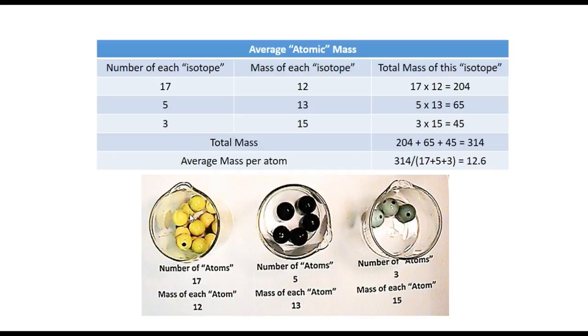To find what the average mass is, even though they're different, what you do is take the 314 you've got here and divide it by the total number of atoms you've got. So the average atomic mass in this case is 12.6.